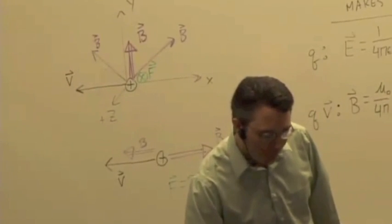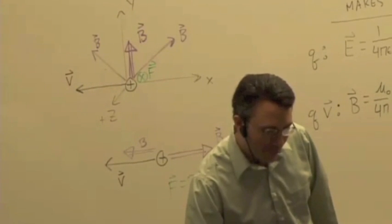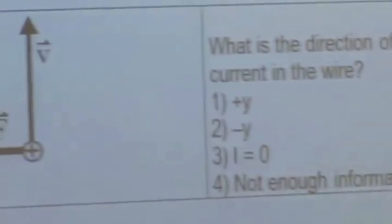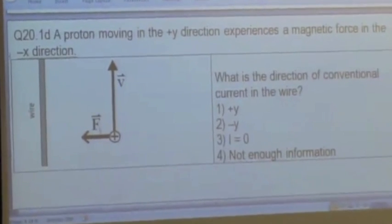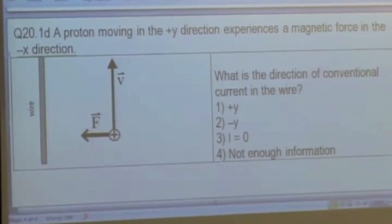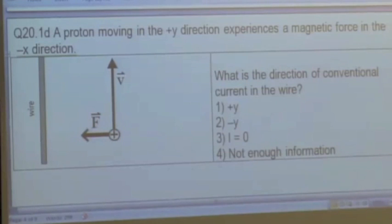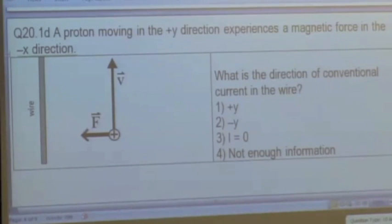Let's try another. Here's a wire with a conventional current running through it. We've got a proton moving parallel to the wire in the positive Y direction, and it experiences a magnetic force in the negative X direction. What's the direction of the conventional current in the wire? You have to think through a couple steps in reasoning here — talk to your neighbors and see what you think.